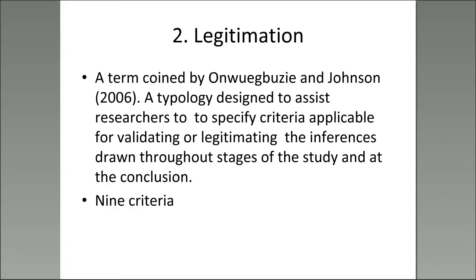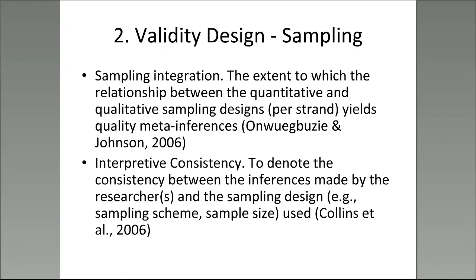Legitimation — a term coined by Onwuegbuzie and Johnson 2006 — developed a typology of different criteria allowing researchers to ascertain that they have legitimation or validity checks within their design. They have nine criteria. The one relevant to sampling design is sampling integration: the extent to which the relationship between the quantitative and qualitative sampling designs yields quality meta-inferences. If you have identical individuals participating in both the quantitative and qualitative streams of your study, you will likely have a higher degree of sampling integration.